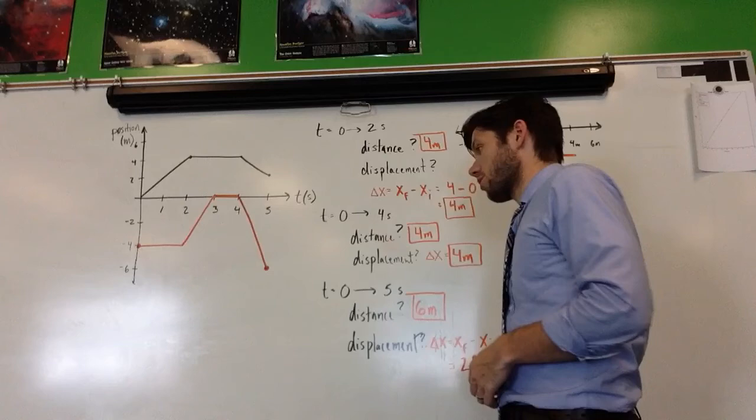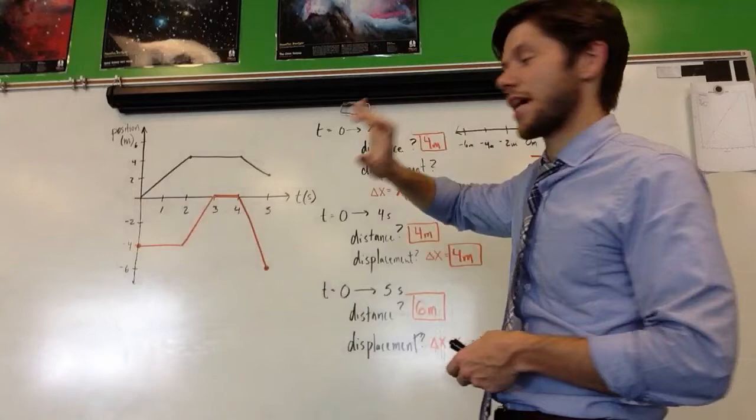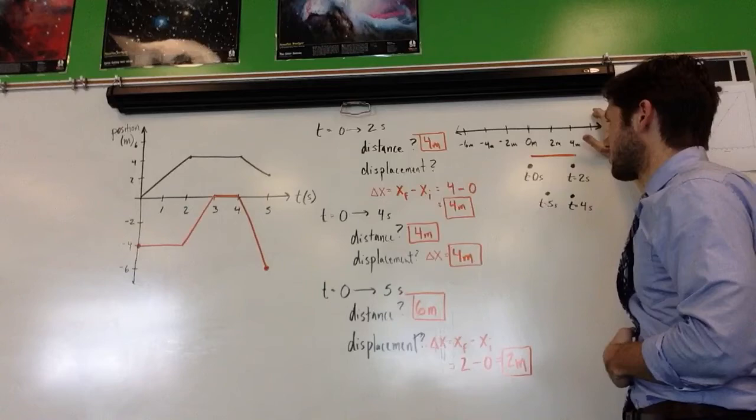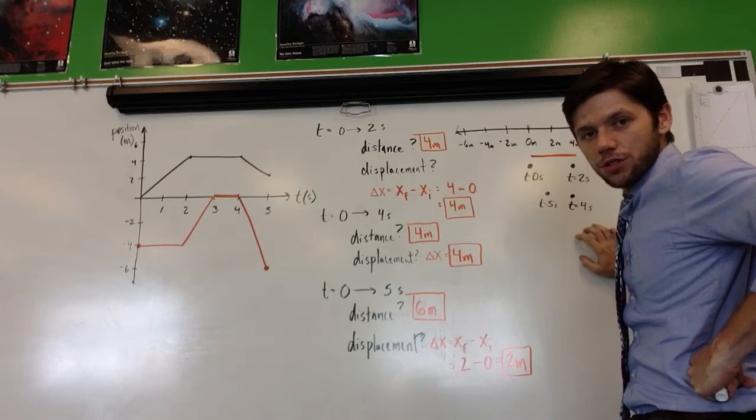So, a couple tools here that you're going to become familiar with using. One is, of course, the position time graph. This will become your best friend over time, one that we'll use a lot. This is what we call a graphical representation of motion. This picture here is what we're going to refer to as a diagrammatical way of demonstrating motion, and then these are some calculations that allow us to understand what was the motion actually like.